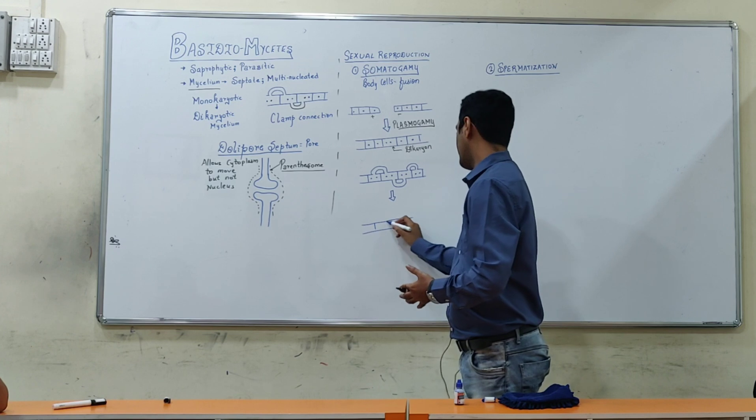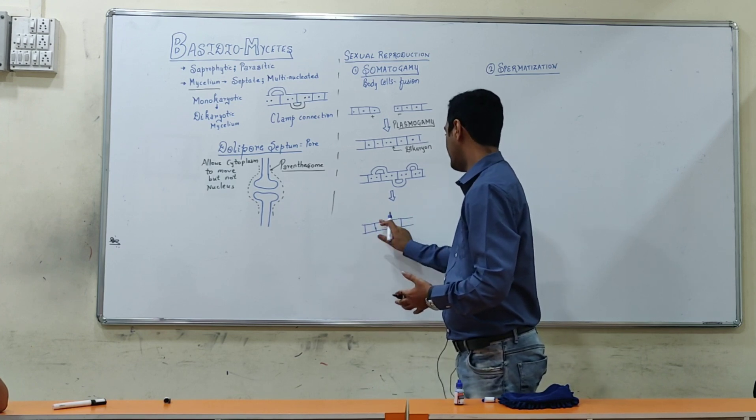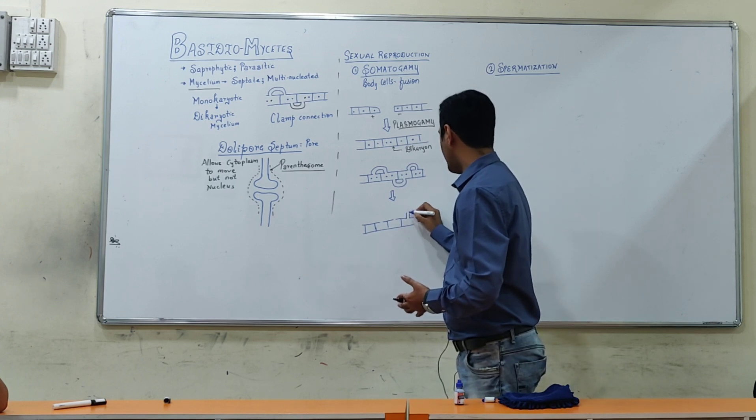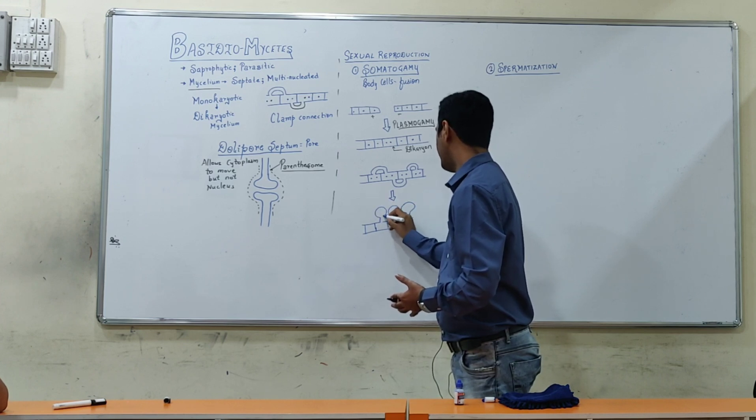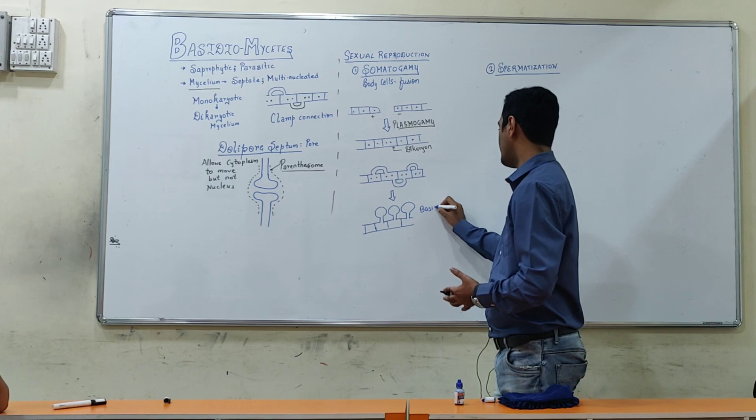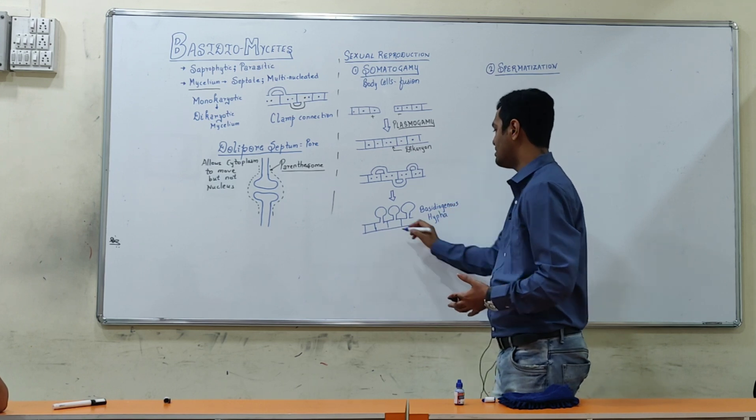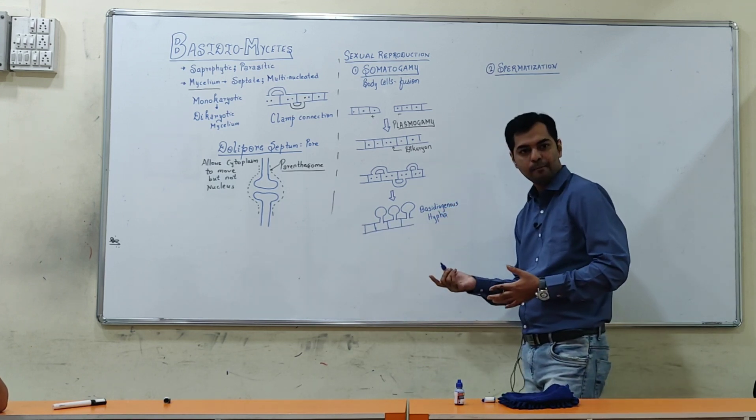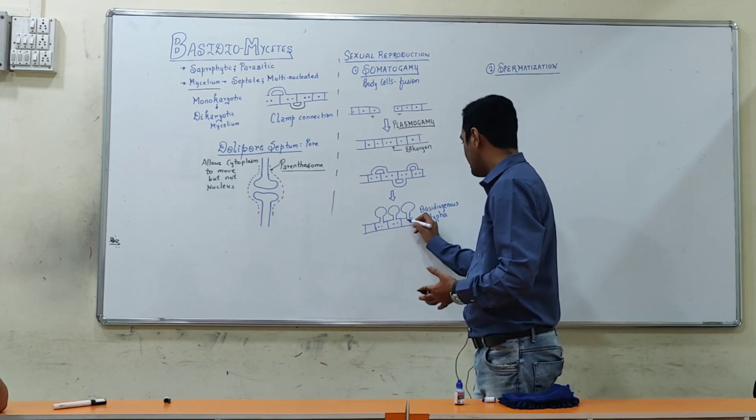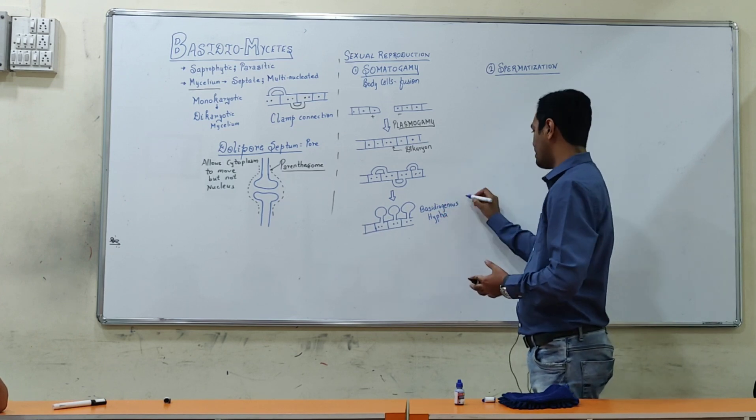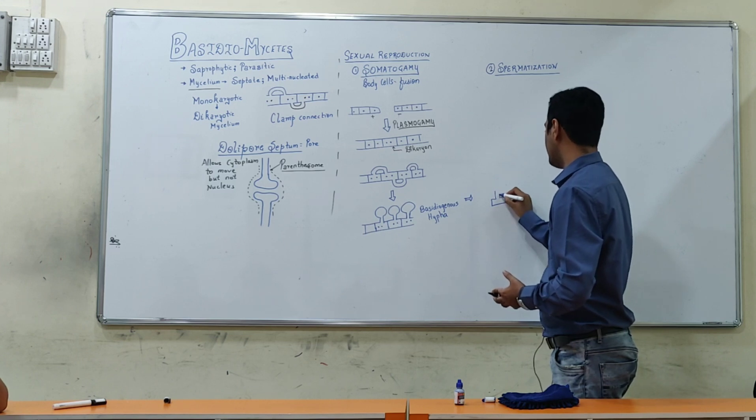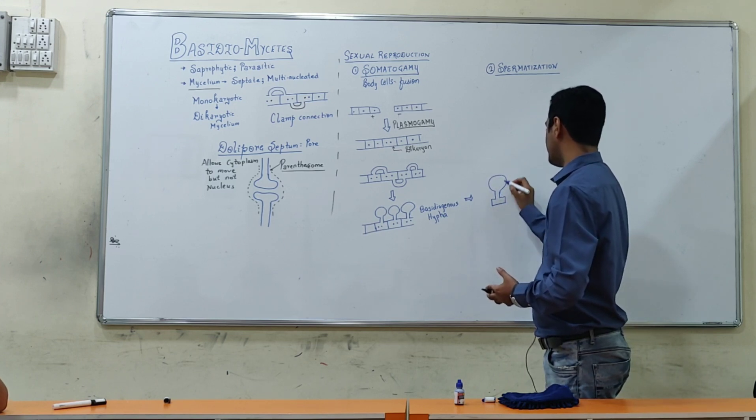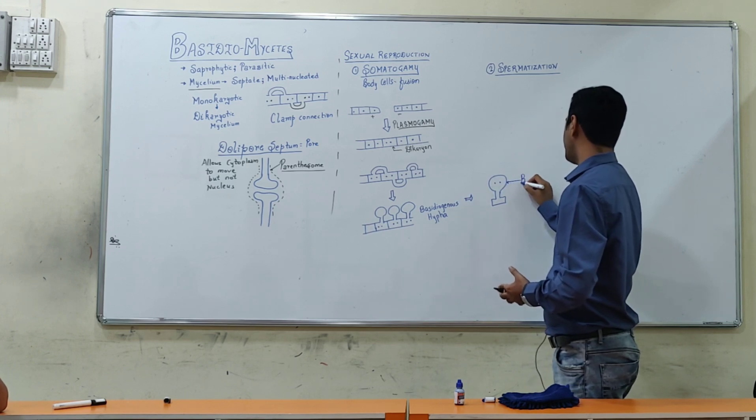After clamp connection, each individual segment, here one hypha will form. That hypha we call as basidiogenous hypha. So this development is known as basidiogenous hypha. This is a similar structure in Ascomycetes which has been created. Ascomycetes hypha, the nucleus is now in individual cells. This is basidiogenous hypha which is further developed after the development.